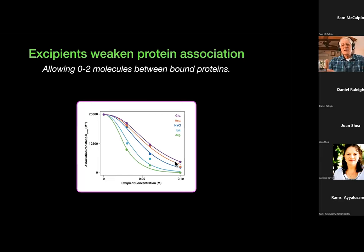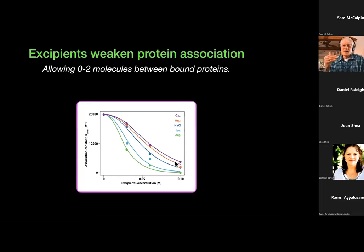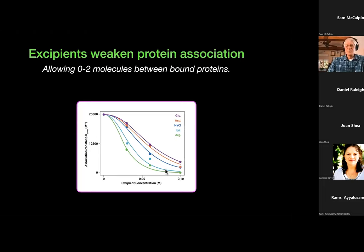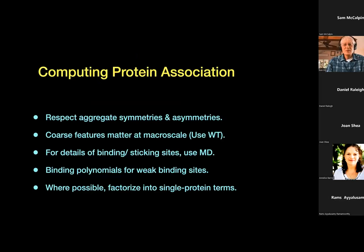When I use this double-stuffed Oreo model — allowing zero to two molecules of ligand in between — that's sufficient to capture pretty well the association constant backed out from viscosity data using the Wertheim theory. In principle, we can now run this whole machine forward: I have a protein-protein interaction, I run ClusPro to find the interface, run MD on one copy of the protein to find the binding affinity of my excipient with that site, plug those numbers into the Wertheim theory, and compute viscosity curves showing how protein-protein association weakens as a function of excipient type and concentration.